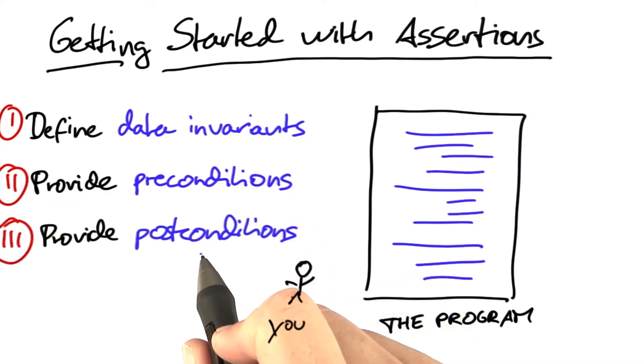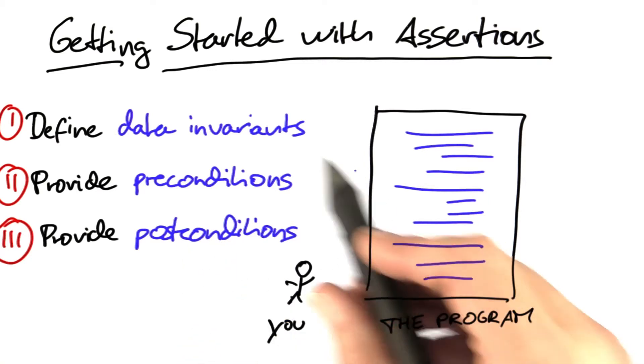provide postconditions in any method you find suspect. You start with partial conditions, and then you expand them further and further to capture more and more of the correct behavior.